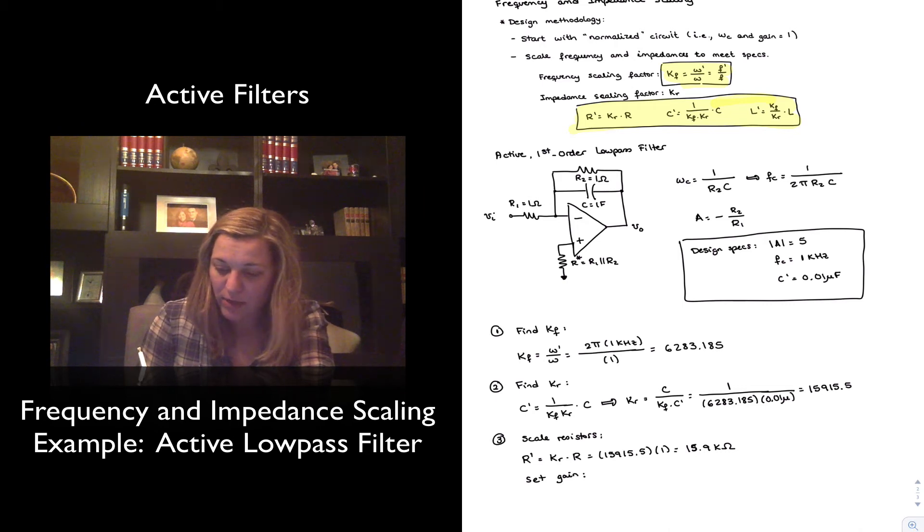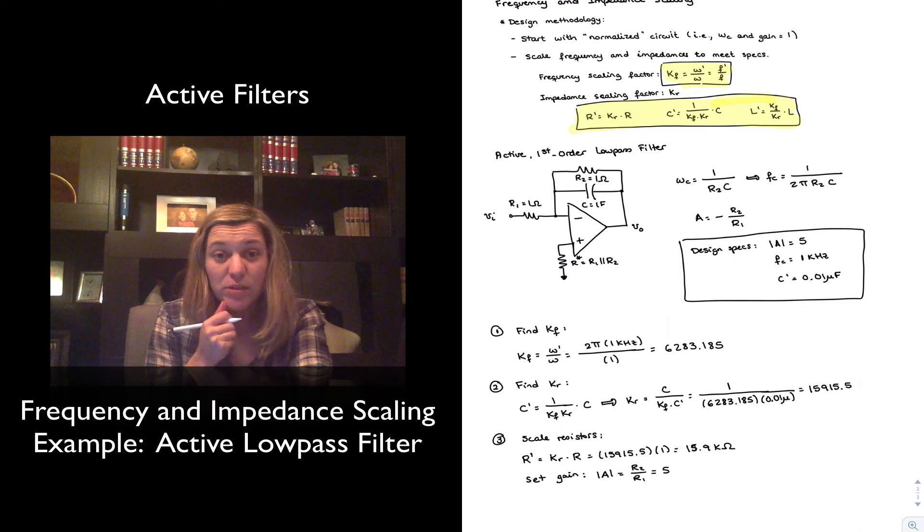And the setting of my gain implies that if A is equal to 5, that means that R2 over R1 must be equal to 5. Now, which resistor do I modify? Well, notice that R2 is the one that is playing a role in setting the frequency response. So that's the one that I want to leave in place at 15.9 kilo ohms. However, R1, I will need to modify to set my gain.